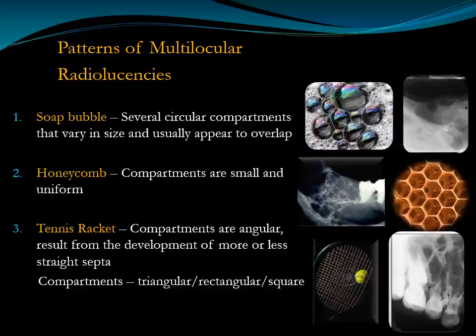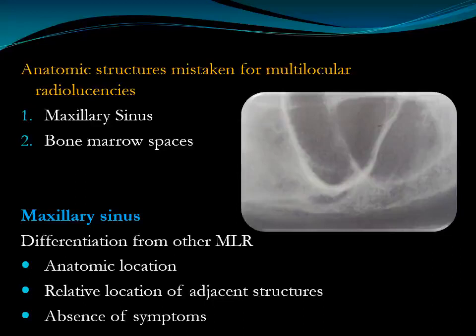Why do you need to know these patterns? Sometimes lesions are described or diagnosed with the help of patterns — that is why patterns are very important. Coming to the anatomical structures that mimic multilocular radiolucency in the jaws: these are the maxillary sinus and bone marrow spaces. The maxillary sinus has multiple compartments which can mimic multilocular radiolucency. If you suspect multilocular radiolucency, you must first exclude whether it is an anatomical structure or a pathological lesion.